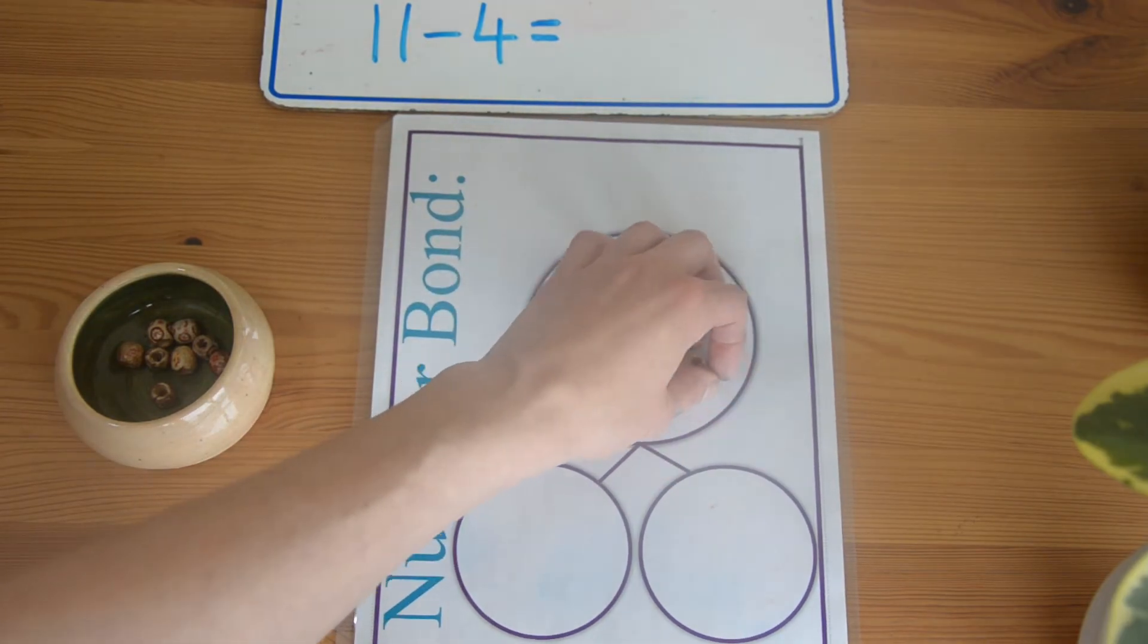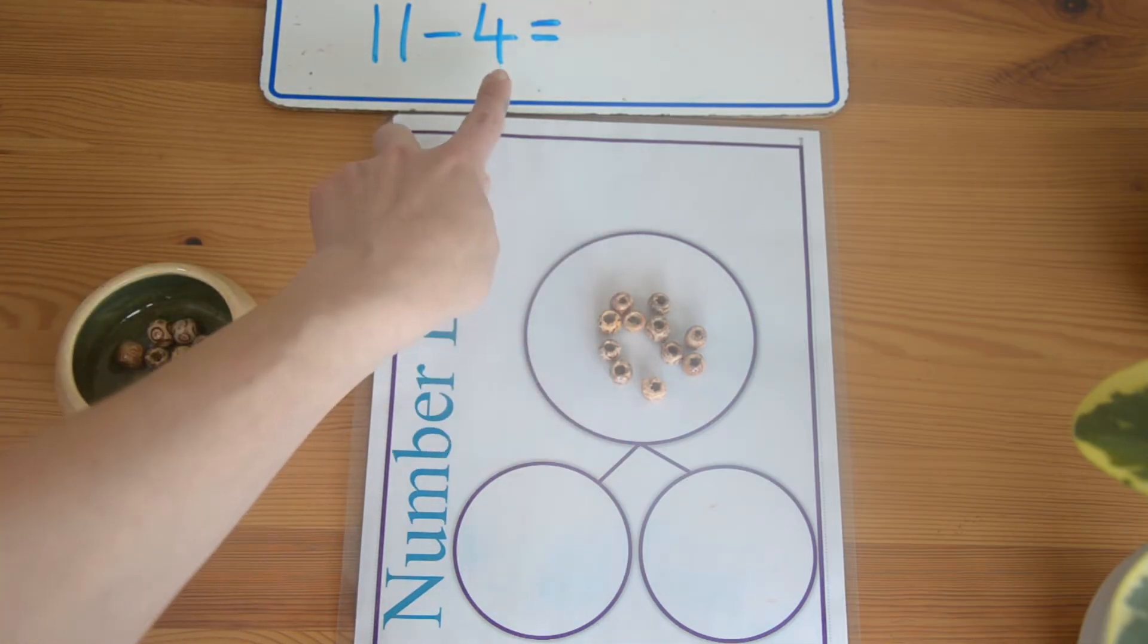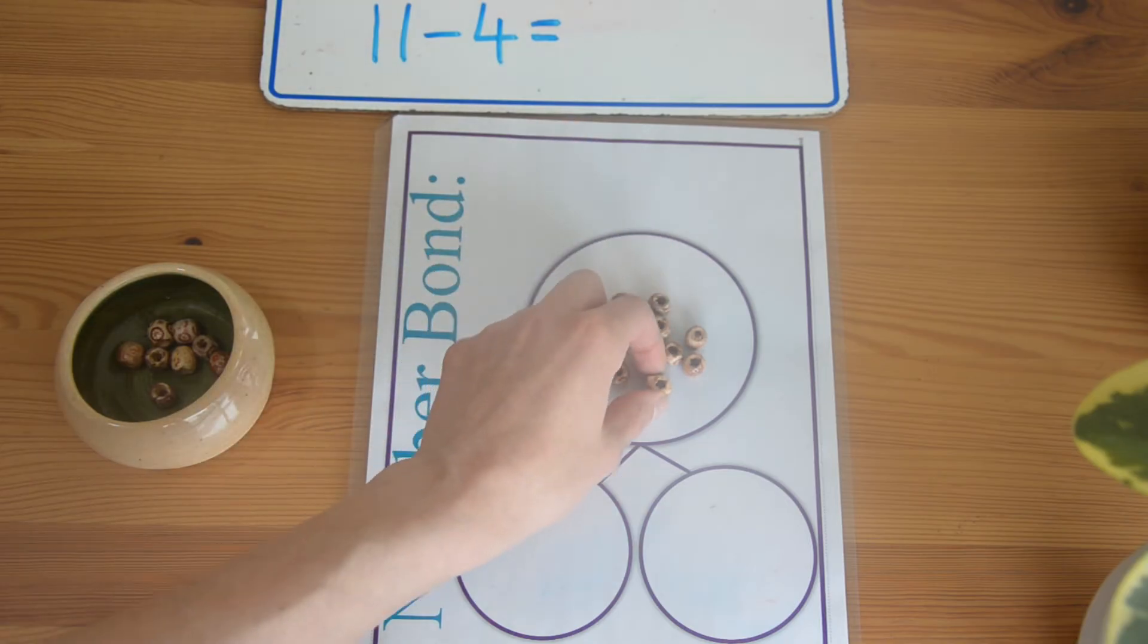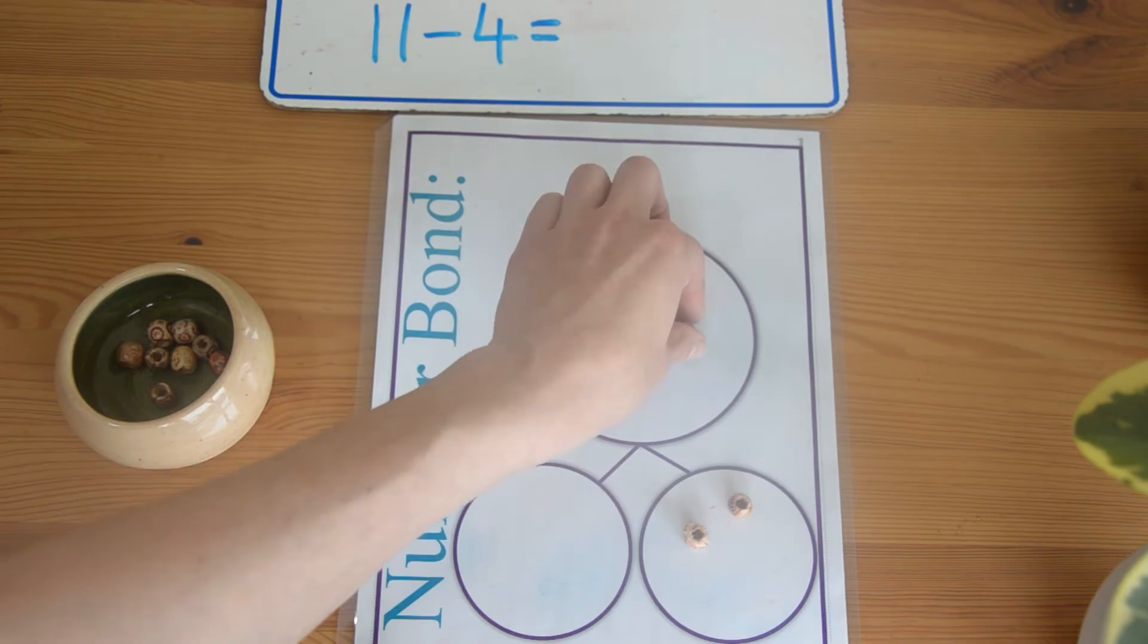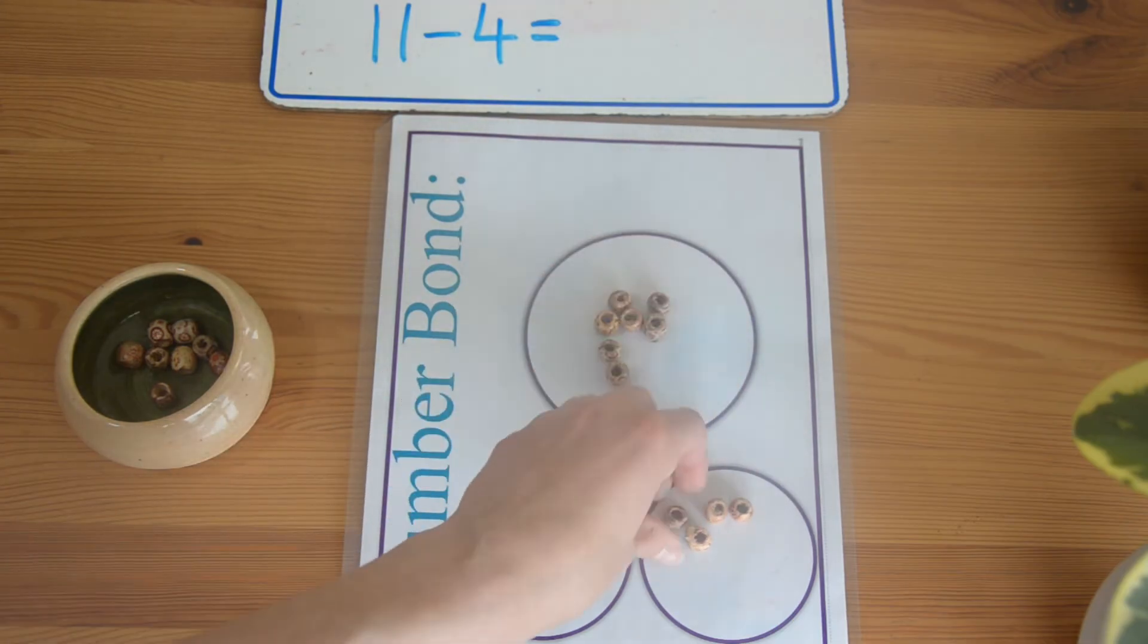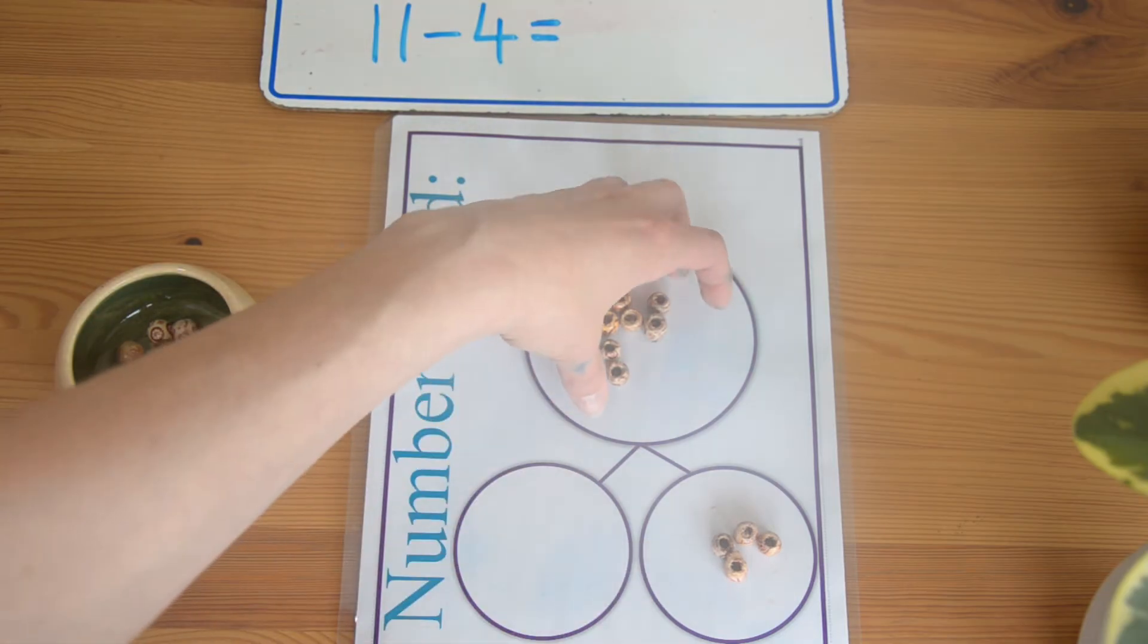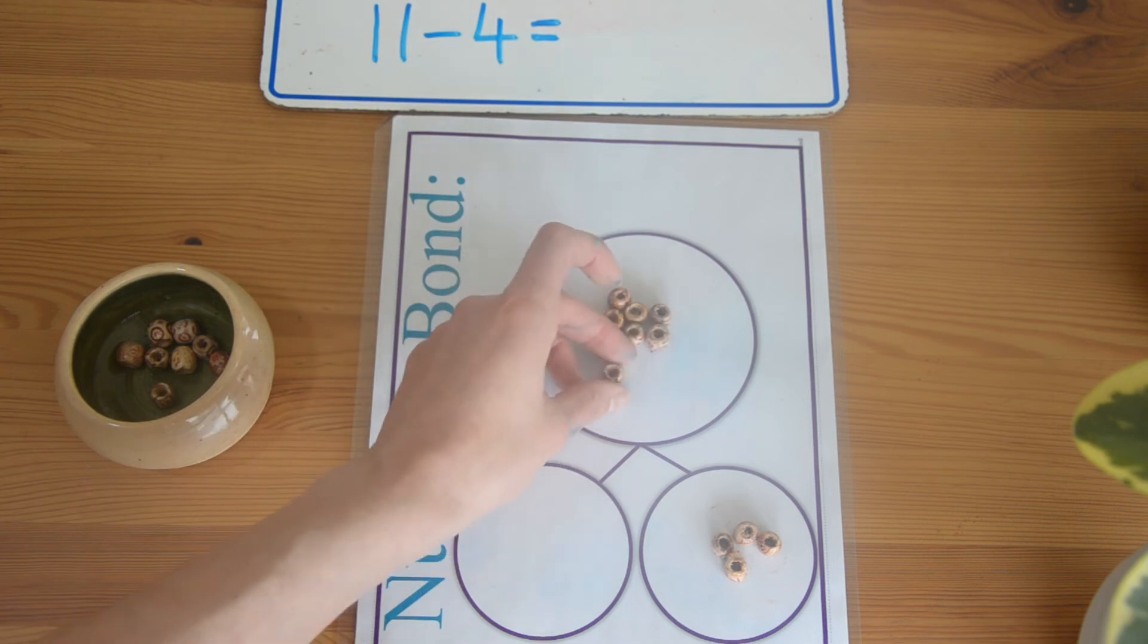We know that when we add them all together, we have eleven. We have one of the parts as well—one of the parts is four. So part of this whole number is going to be four. I'm going to move one of my parts to this part. It doesn't matter which one I put it to, but I'm putting it over here, which means that this part must be my other answer. Let's count how many we have left in the other part.